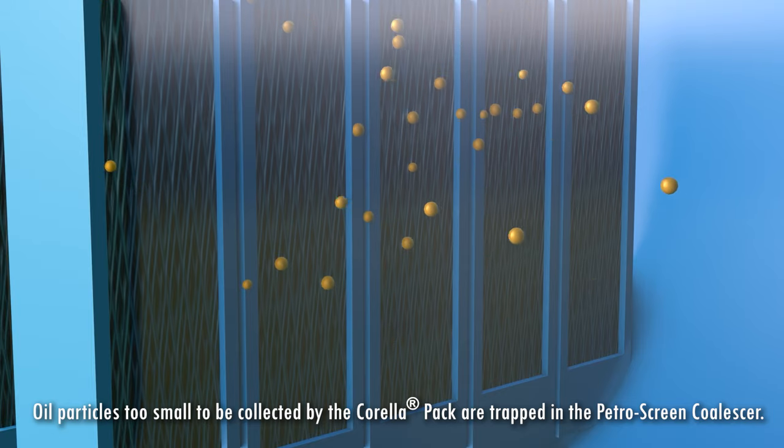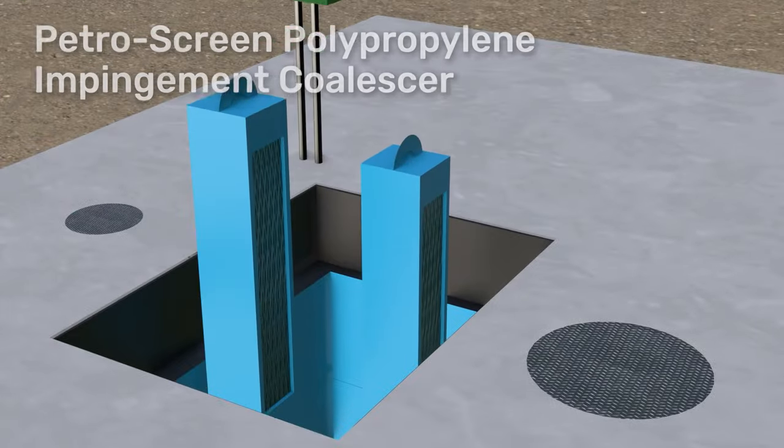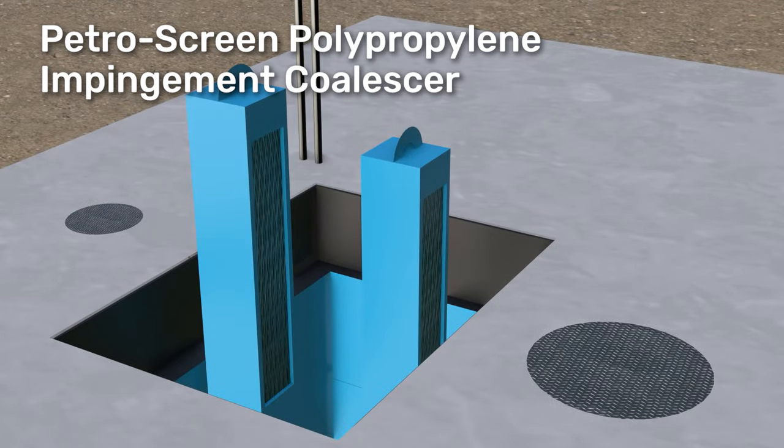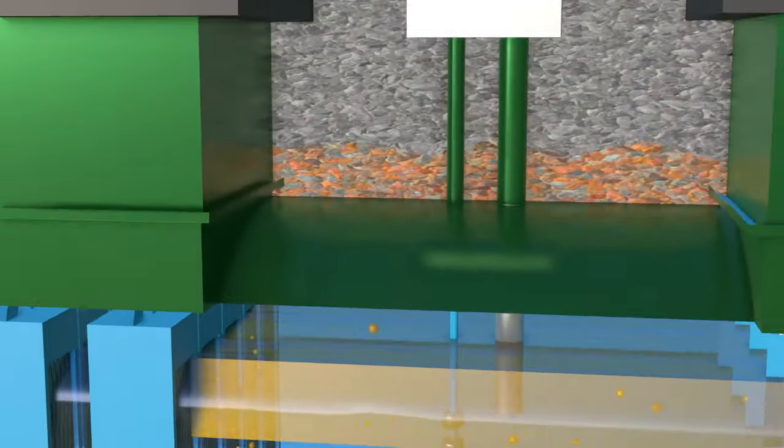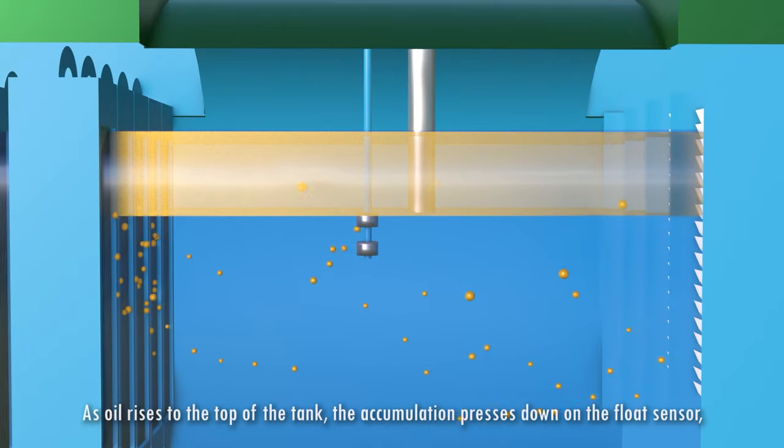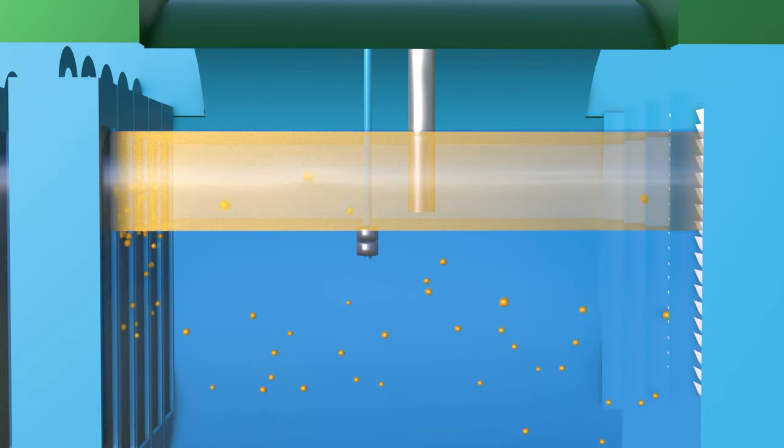Now those also can be removed through an easy access rectangular manway that we're showing for inspection and clean out. As we're accumulating oil on top of the water, we're flowing through the vessel and as the oil builds up on top of the water it sinks the top float which sounds an alarm on our control panel.